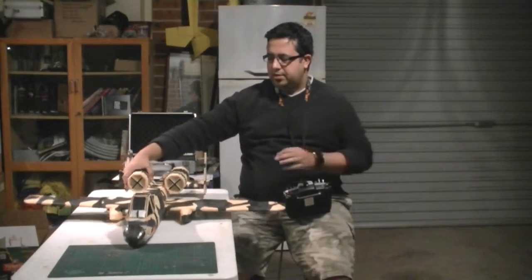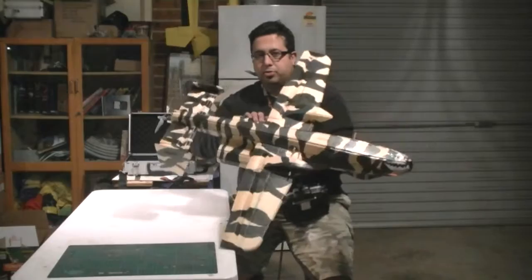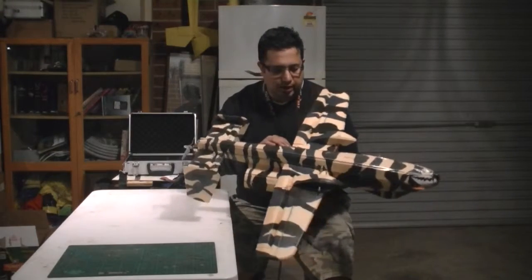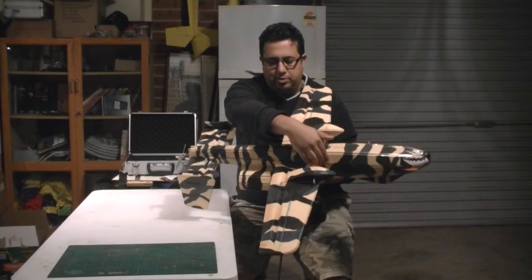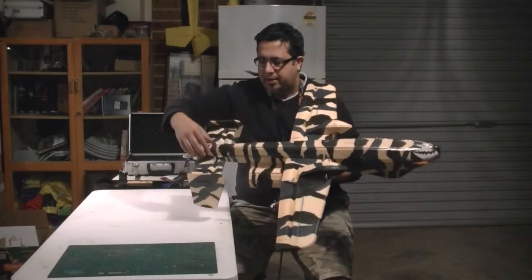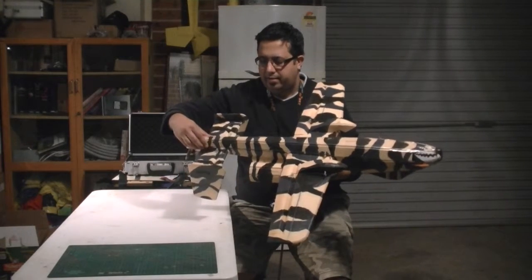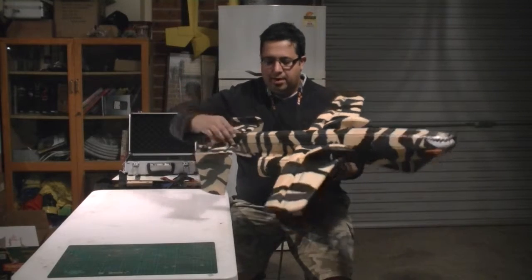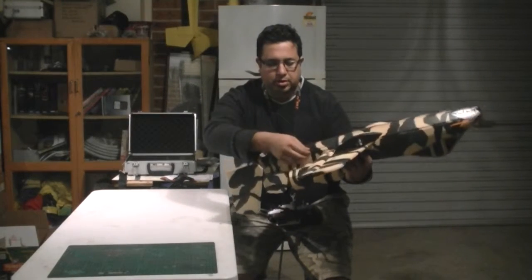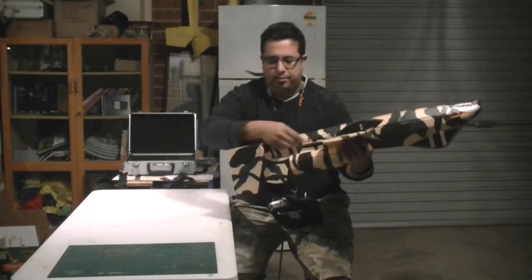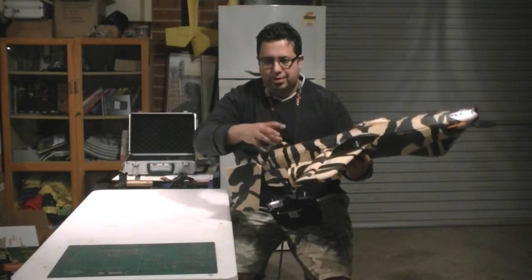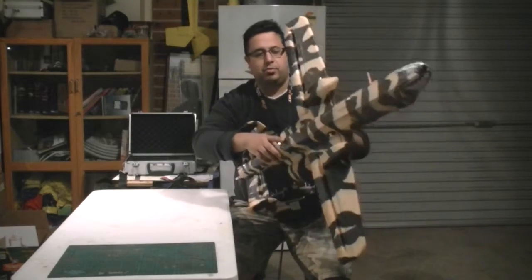So special considerations. As I was saying, the push rod that runs all the way from as far forward as possible on the wing, all the way back to the elevator back here. You really have to be careful and secure. So I've put a zip tie just to secure that to make sure that that push rod doesn't flex as it moves.